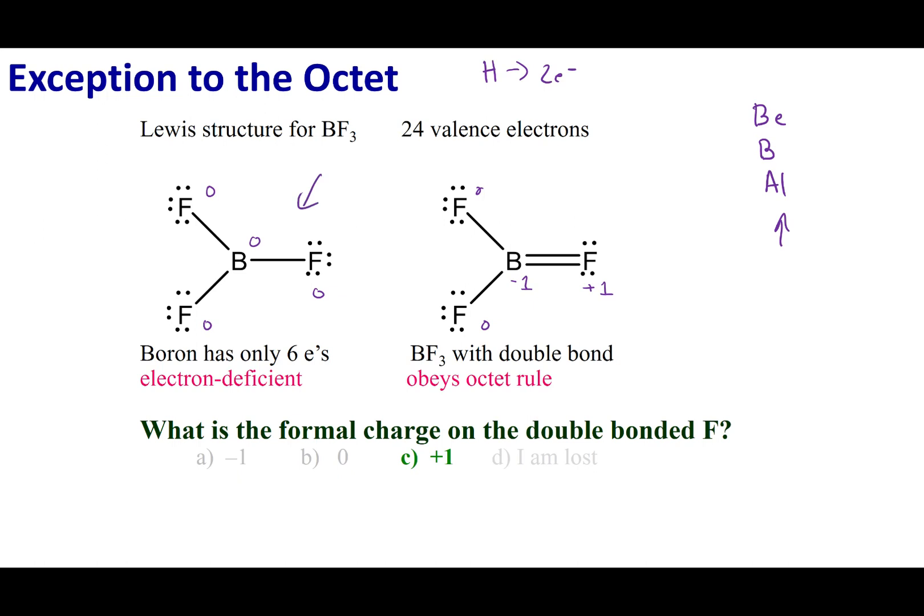In this particular example, you can see that I'm closer to zero with my formal charges here. So a better Lewis dot structure is one where I go electron deficient.